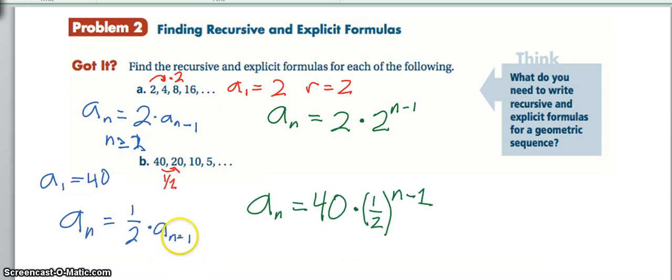So then when we set up the recursive formula, we have our a sub n minus 1 times the ratio of 1 half. And when we set up our explicit, we have the beginning term times the ratio to n minus 1.